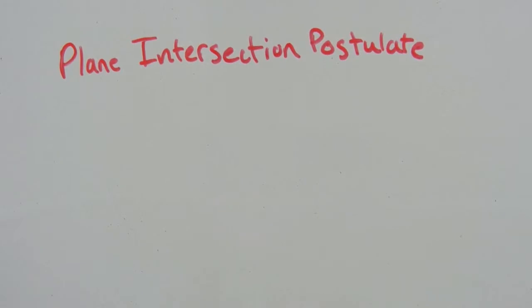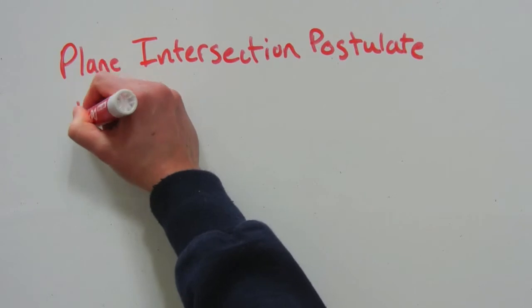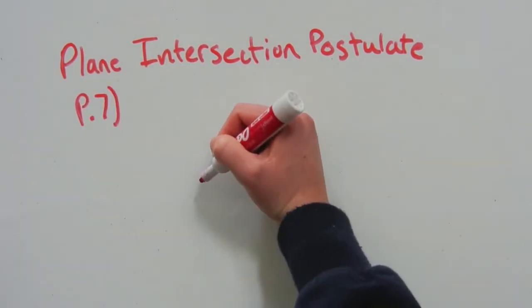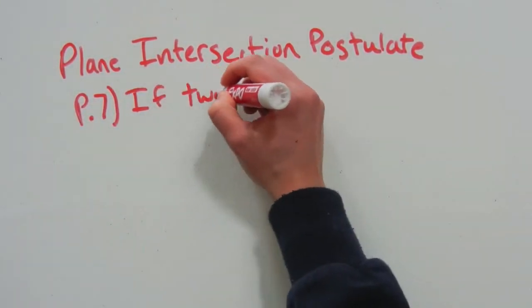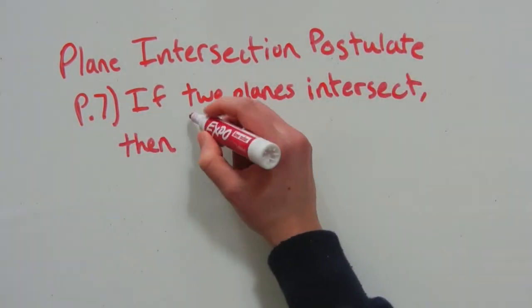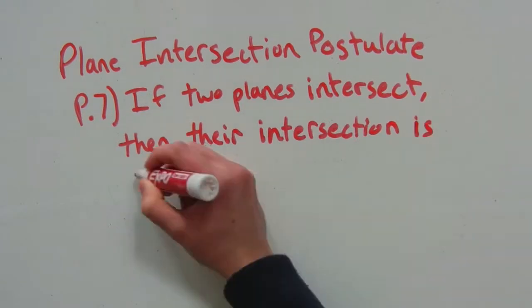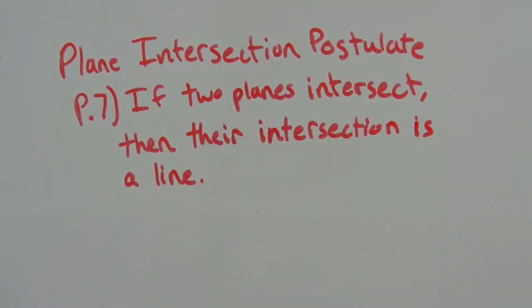The last postulate we're going to go over is the plane intersection postulate, which will be P7. It states that if two planes intersect, then their intersection is a line. Thinking about the line intersection postulate, we know that when two lines intersect their intersection is a point, so it makes sense that when two planes intersect their intersection is a line.